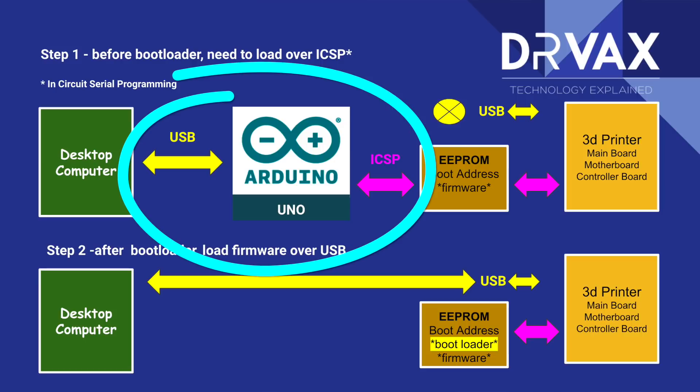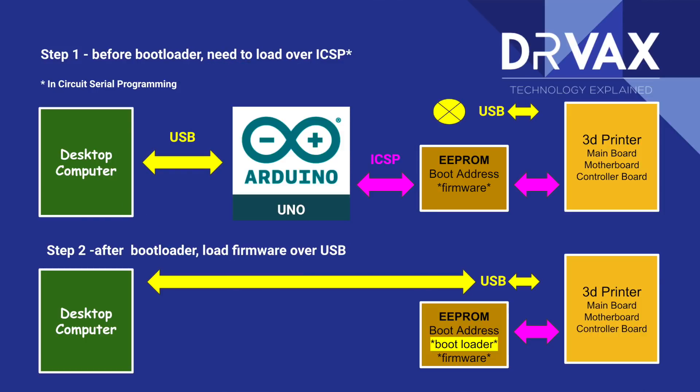Loading a new bootstrap program onto the computer requires a standard PC to connect through an UNO microprocessor board, which has those ICSP connections and also has a USB connection. So our computer connects to the UNO over USB. The UNO has a bootloader and knows how to read software from the USB connection. We're going to load software onto the UNO that knows how to connect to the ICSP connection on the Ender 5, and use that connection to load a bootloader onto the Ender 5.